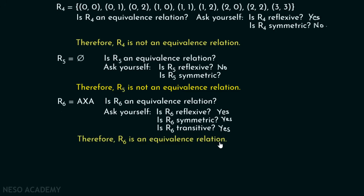We have discussed six different relations and seen how to identify whether a relation is an equivalence relation or not. To determine this, we must check three properties: the relation must be reflexive, symmetric, and transitive. If all three properties are satisfied, then the relation is an equivalence relation. Thank you for watching.